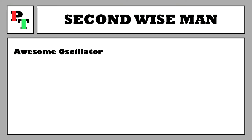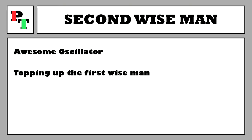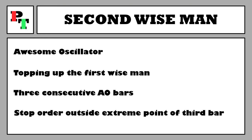Wise Man the Second is based around the Awesome Oscillator. If already in a trade from the divergent bar, this signal is seen as a topping up. Since the divergent bar aims at reversal entries, the Awesome Oscillator will have previously been moving against your trade direction. To take action we need to see the close of three consecutive bars in our trade's favour — three upward green bars in a row for a buy trade or three downward red bars for a sell. At the close of the third bar we set a stop order just outside the extreme point of price for that candle.